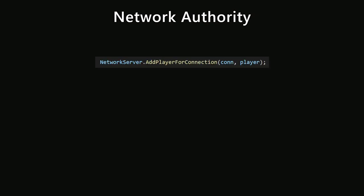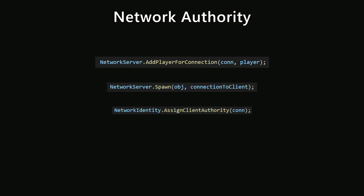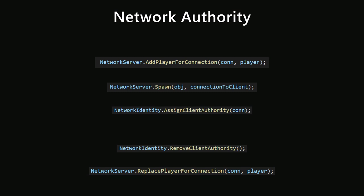There are three ways we can give the authority of an object to a client. We can spawn a player object using NetworkServer.AddPlayerForConnection, and in this case the client associated with that connection is automatically given authority over the player object. We can also give authority to a client when an object is spawned by passing in the connection when calling NetworkServer.Spawn. Lastly, we can give authority using the AssignClientAuthority method on the network identity class. To remove authority, we use the RemoveClientAuthority method, and for player objects we'd use NetworkServer.ReplacePlayerForConnection.